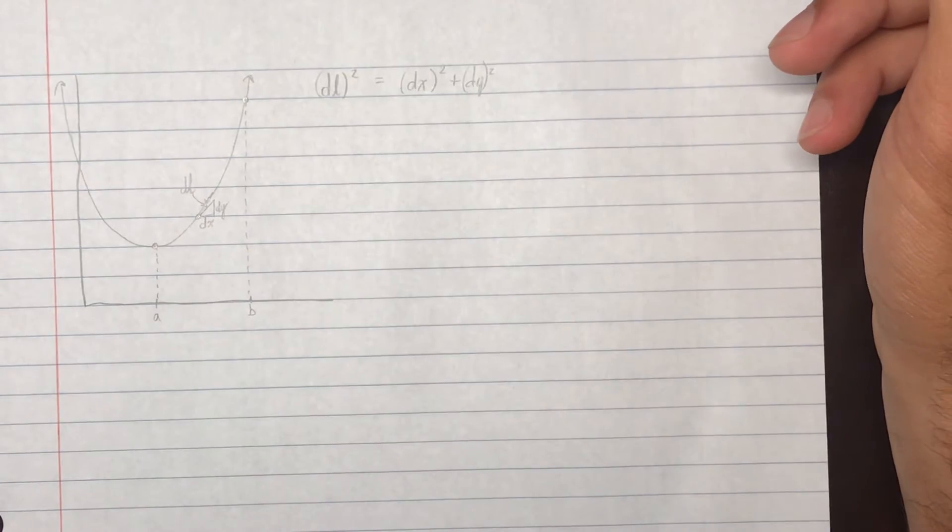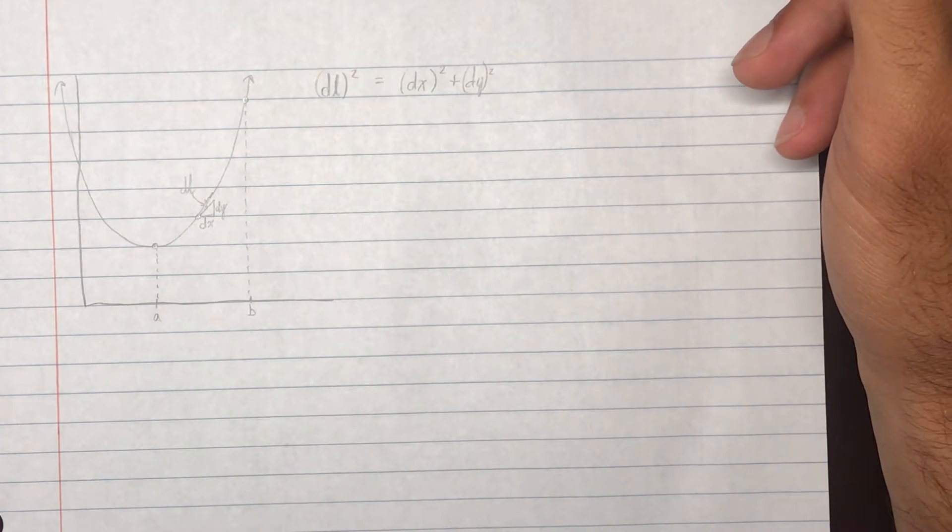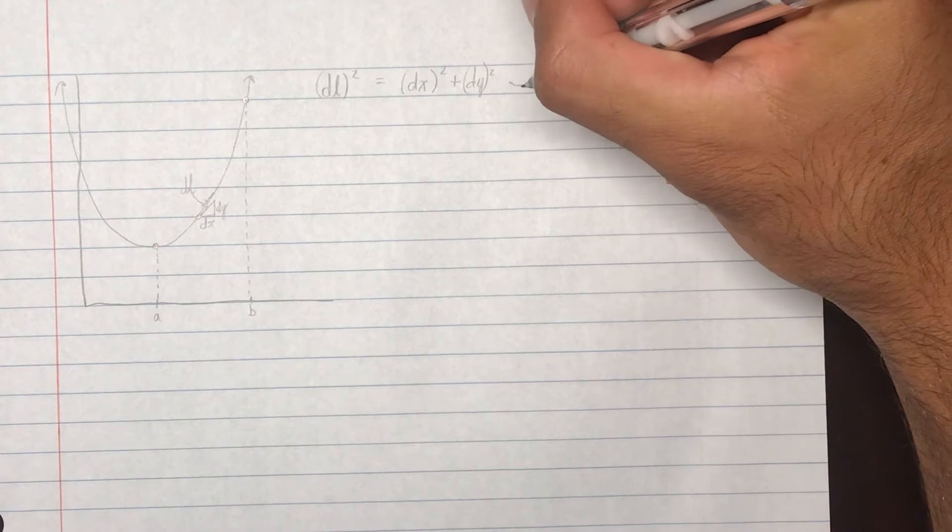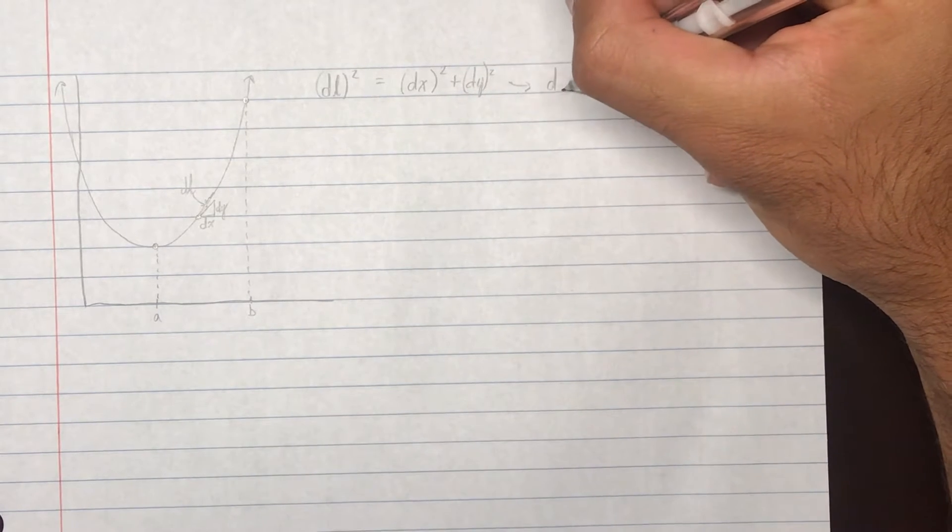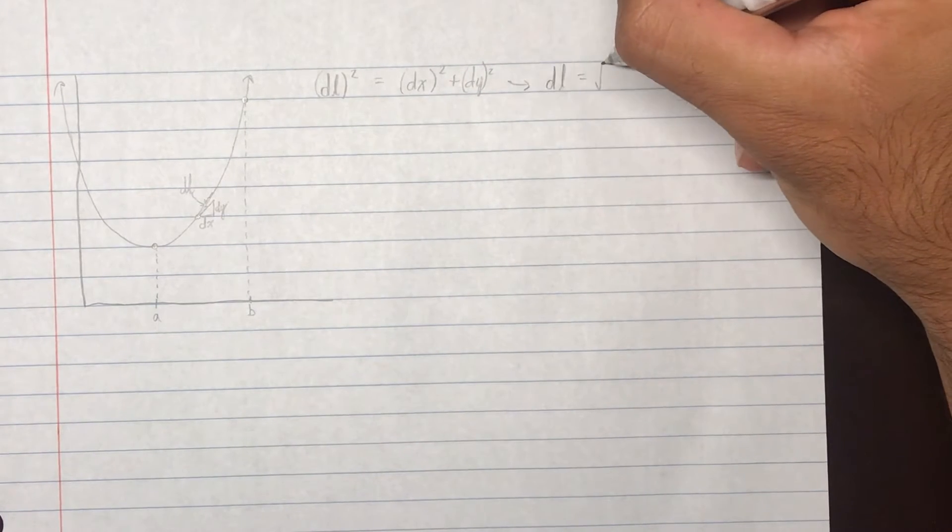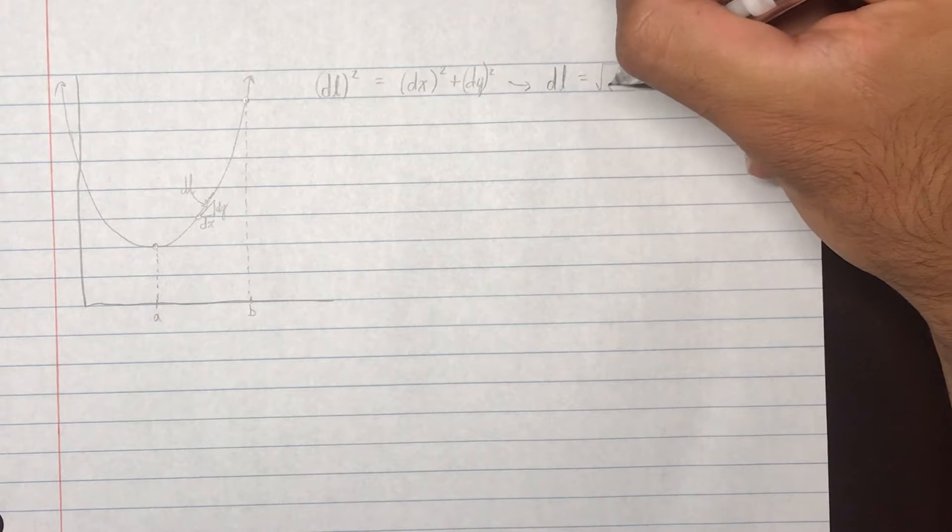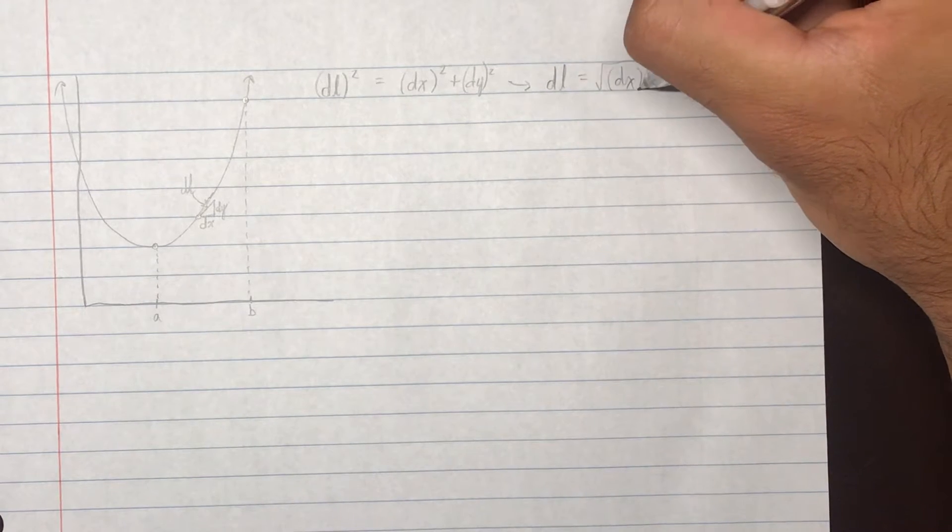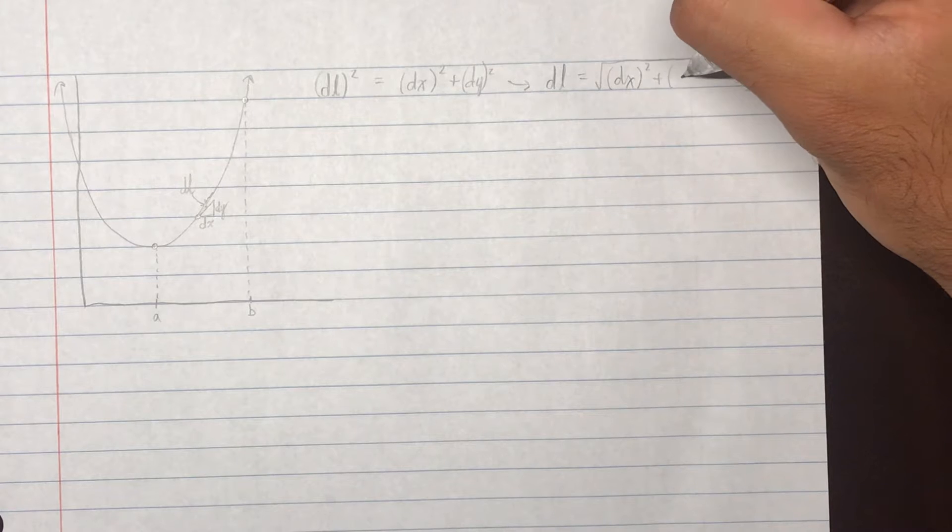But, obviously, to isolate dL, we're just going to square root both sides. So, we get dL equals square root of dx squared plus dy squared.